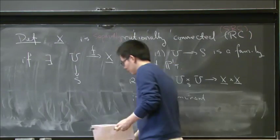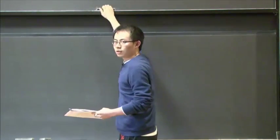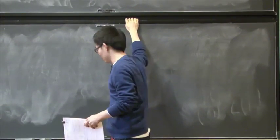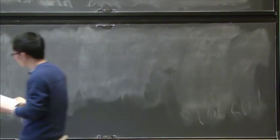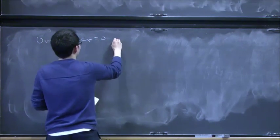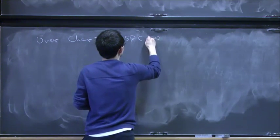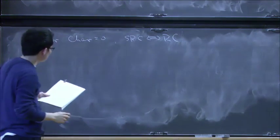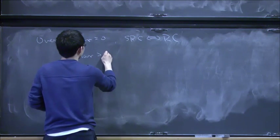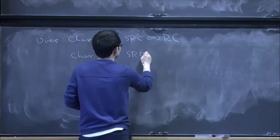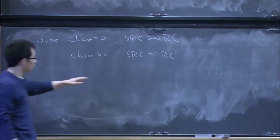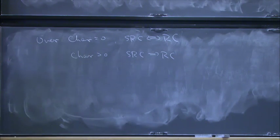So clearly, over characteristic zero, SRC and RC are equivalent. But SRC works better in characteristic P. And at this time, we don't know whether RC implies SRC in characteristic P. Or maybe we have counter examples already.